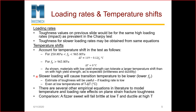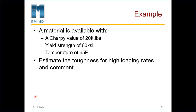There are several other empirical equations in the literature to model temperature. A ferritic steel will fail brittle at low temperature and ductile at high temperature. For the worked example: a material is available with a Charpy value of 20 foot-pounds, yield strength of 60 KSI, temperature 65 degrees Fahrenheit. Estimate the toughness for high loading rates and comment.